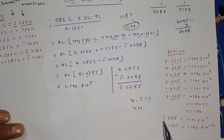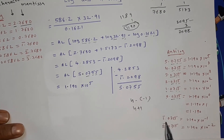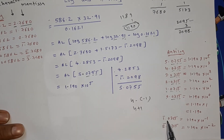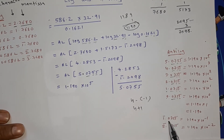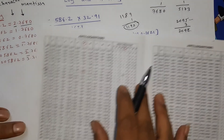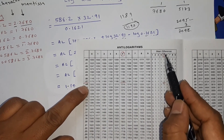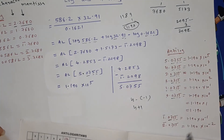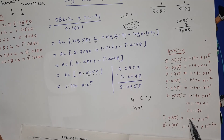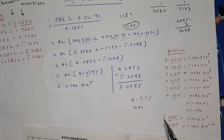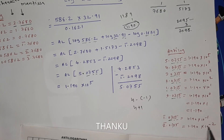If in the calculation you get bar 1 — for example bar 1.0755 — you look up 0755 in the anti-log table the same way and get 1190, so 1.190 × 10^(bar 1) = 1.190 × 10⁻¹. If it is bar 2, then 10⁻². Thank you, students.